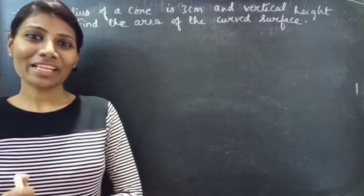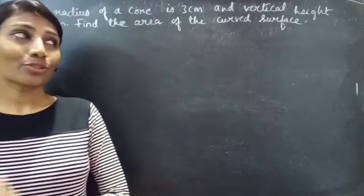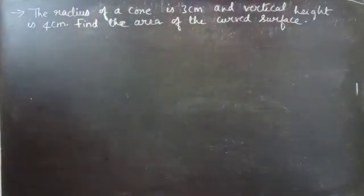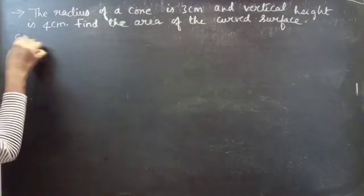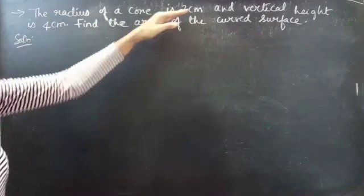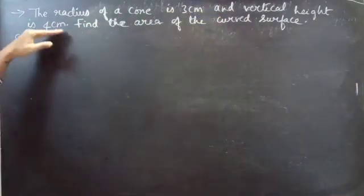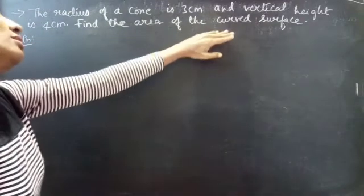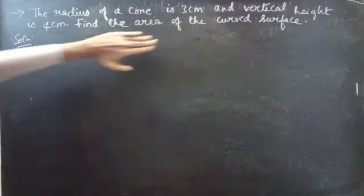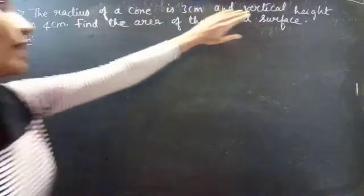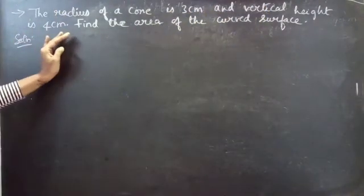Hello everyone, this is Kalkna here. In this video we are going to find the curved surface area of a cone where radius and vertical height is given. The problem: the radius of a cone is 3 centimeters and vertical height is 4 centimeters. Find the area of the curved surface.